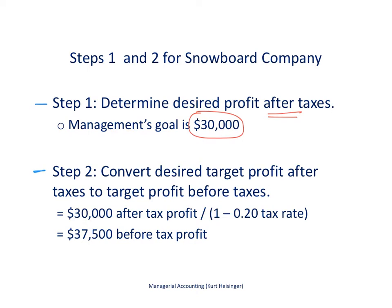Step 2 is to convert that $30,000 in after-tax profit to profit before taxes. We take our after-tax profit of $30,000 and divide that by 1 minus the tax rate — 1 minus 20%, or 1 minus 0.2. That tells us we want $37,500 in profit before taxes, meaning our taxes are going to be 20% of that, or $7,500. That $7,500 would be deducted from $37,500 to get $30,000 in profit after tax.